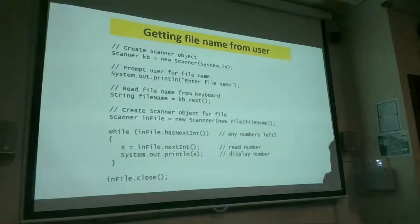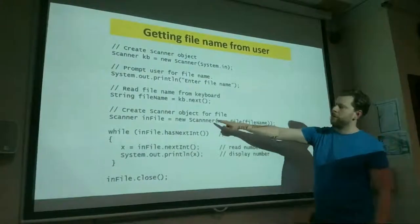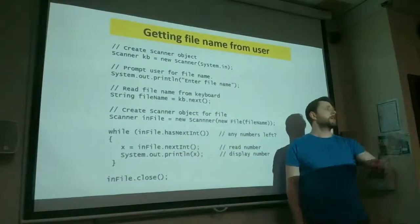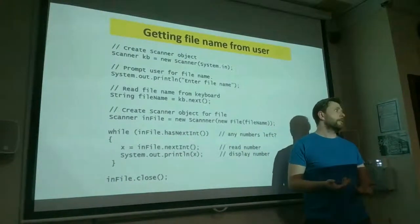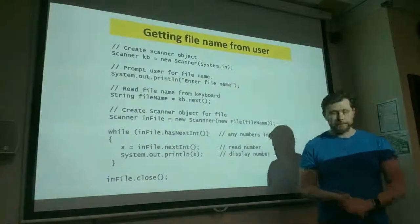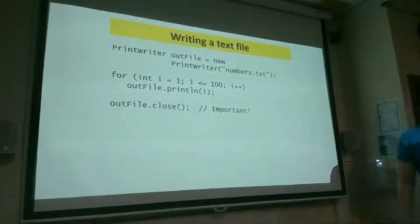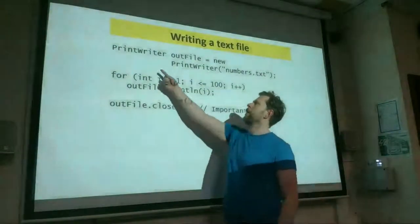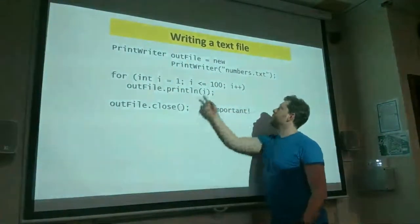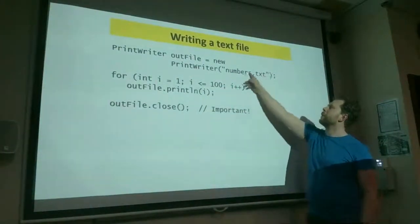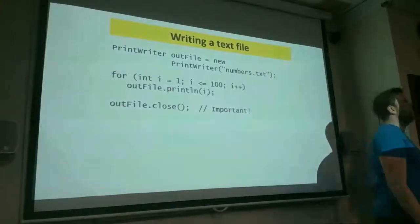Because we're using a Scanner, we keep the familiar language: nextInt, hasNextInt, nextDouble, nextLine — all reading from the buffer. To write to a file, we use a PrintWriter pointed at a file. The file name in quotes again tells us the file is in the same folder as the Java program. PrintWriter has 'print' and 'println' which work exactly the same as System.out — you pass in a value and it gets written to the text file.